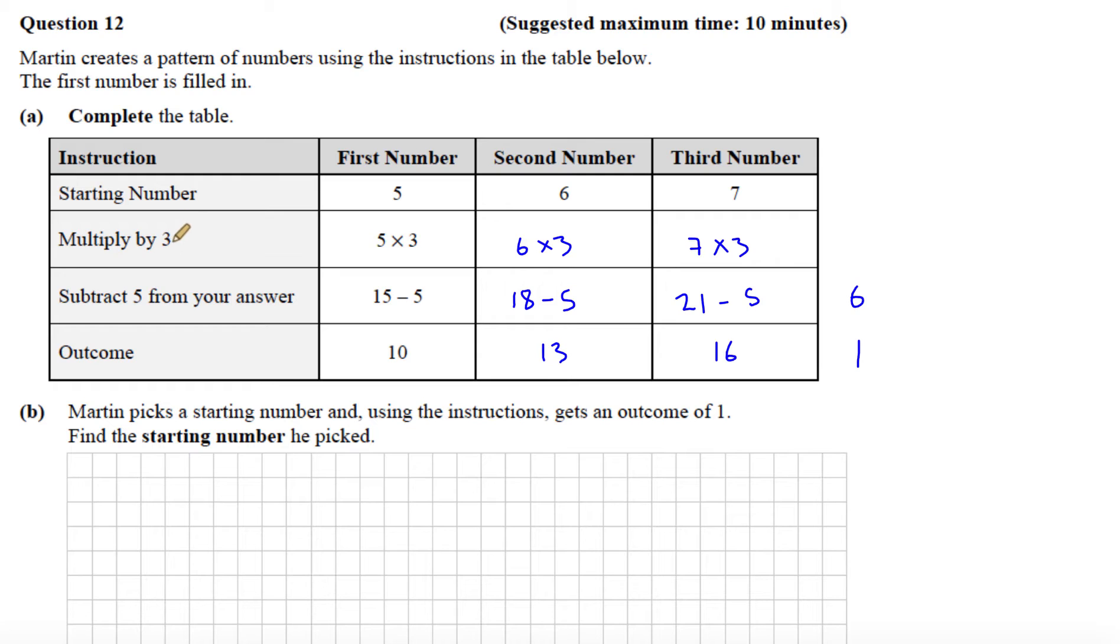And then instead of multiplying by 3, we're going to divide by 3. So 1 add 5 gave me 6. And then 6, the reverse of multiply by 3 is to divide by 3. 6 divided by 3 gives me 2. So that's my starting number is 2.